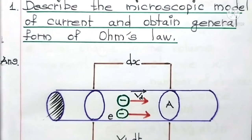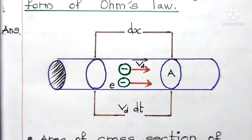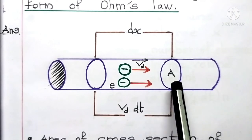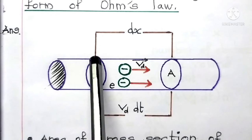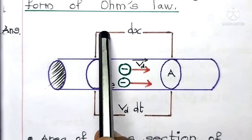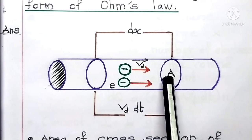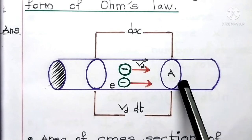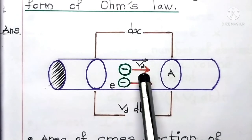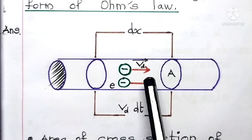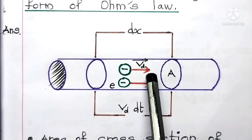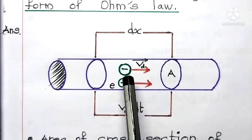First of all, we need to draw a neat diagram. This is the cross-section of a conductor. The cross-section of this conductor is capital A. We have taken a small length dx, and within this volume of the conductor, we have a few electrons. The red color arrowheads represent the direction of the electrons — they are moving with a particular velocity called drift velocity. The velocity of electrons in the direction opposite to the electric field is known as drift velocity.